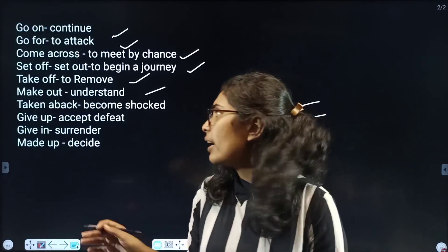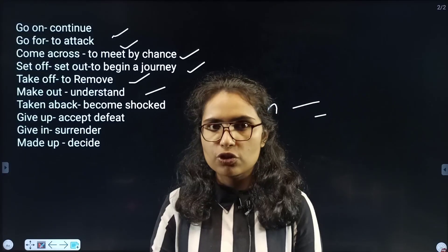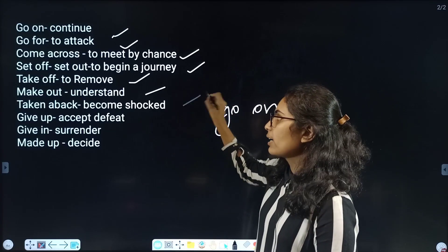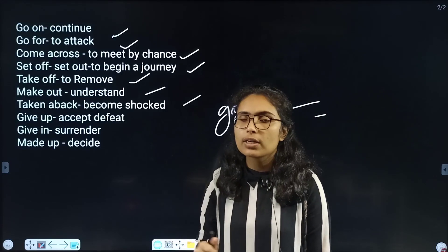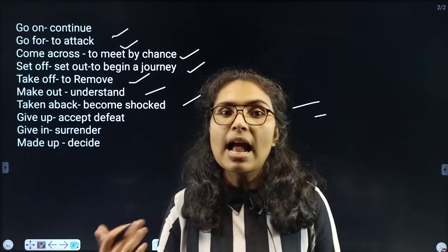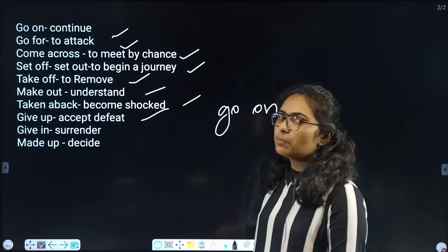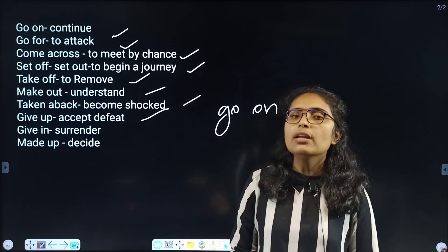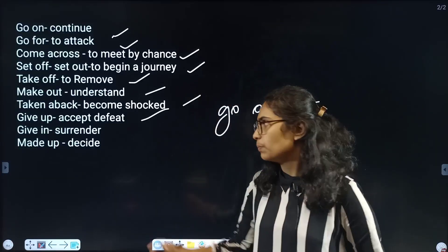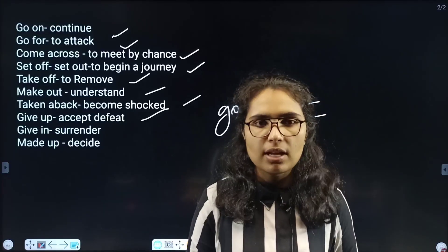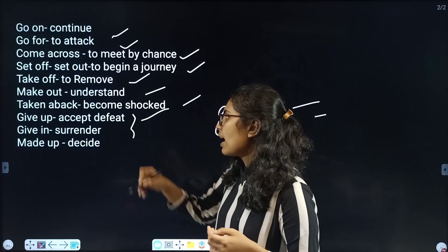Next: make out. The husband and wife make out about their argument — they are now understanding each other. Make out means to understand. Then: taken aback. He was taken aback by that accident — he became shocked. Taken aback means to become shocked. Then: give up and give in. Give up means to accept defeat — I give up from this competition. Give in means to surrender — I give in, I am surrendering. Both give up and give in have similar meanings.